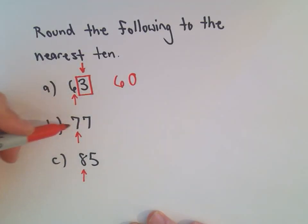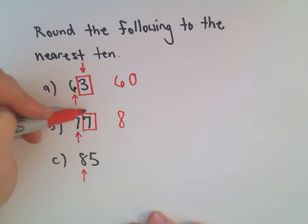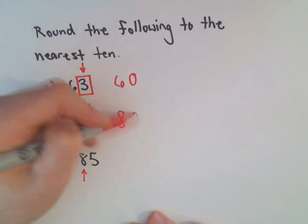My next one's 77. I look one place to the right. And that's 5 or greater. So since it's 5 or greater, we increase the 10's digit by 1. So if we increase by 1, we'll get an 8. And again, everything to the right of that turns into a 0.